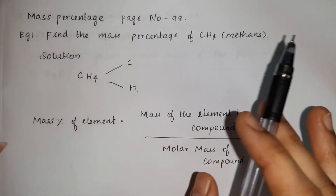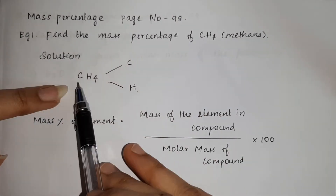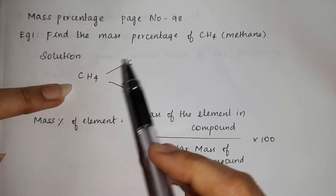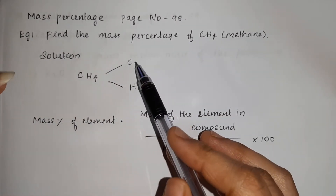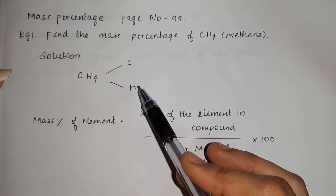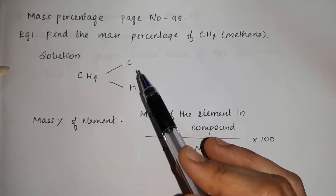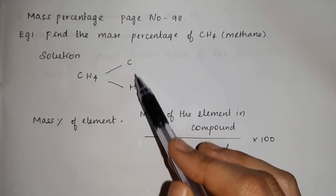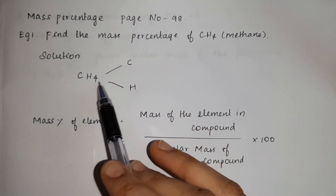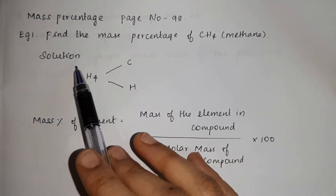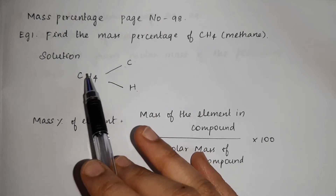The elements of the compound are equal to carbon and hydrogen atoms. If we have a compound, this is CH4. This is a compound.